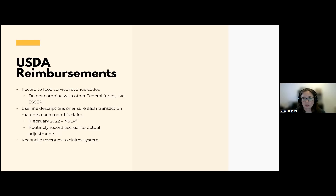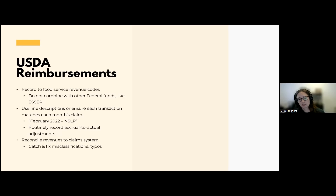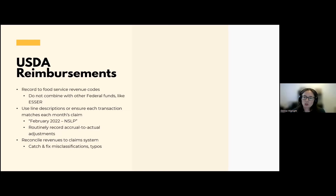Reconciling to the claim system is one of the first things we do during a USDA administrative review — we look at federal revenues and check if they match the claim system. If they don't, is it easy to figure out what the difference is — for example, a June claim not received until July? We're encouraging everyone to do this on their end. As a food service director, you should be getting a revenue report, looking at the claim system, and making sure those numbers tie out. If they don't, can your business office explain why? This is your chance to catch and fix misclassifications or accounting errors, like accidentally recording to a different revenue code. Implement routine reconciliations to know what's happening in your financial management system for the school lunch program.